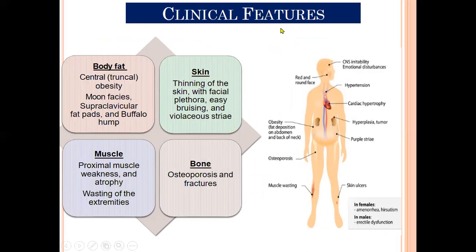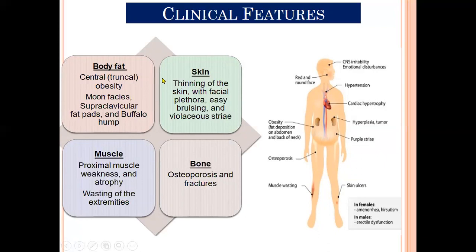Clinical presentation includes effects on different body parts: truncal or central obesity, moon facies, supraclavicular fat pads, and buffalo hump. There is also thinning of the skin with facial plethora, easy bruising, and violaceous striae. On muscle, there may be proximal muscle weakness and atrophy with wasting of the extremities. On bone, it may lead to osteoporosis and fractures.